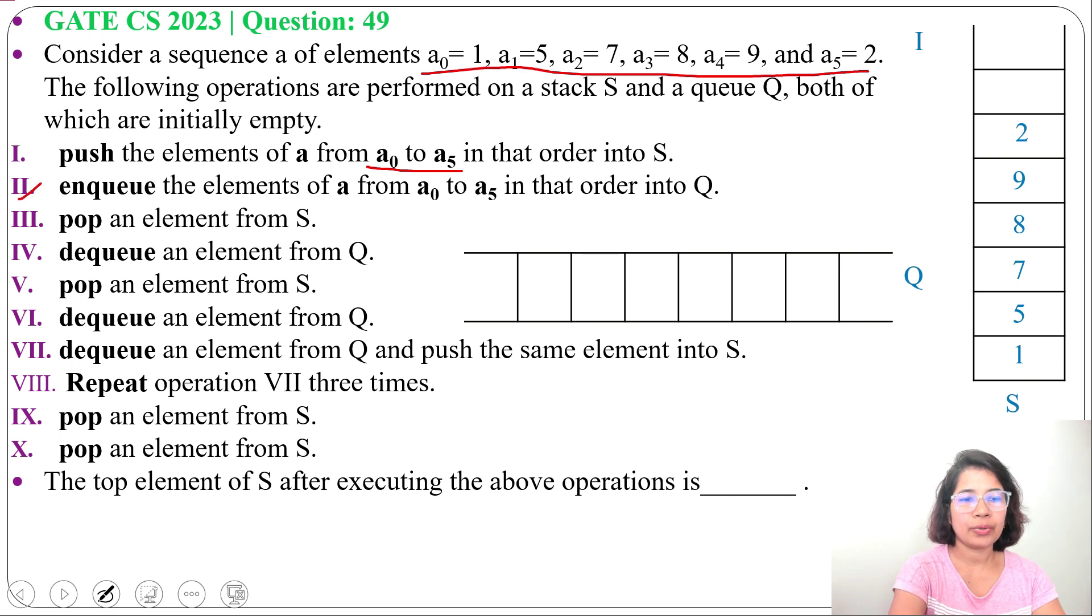Next, operation 2: enqueue the elements of a from a0 to a5 in that order into Q. So we will enqueue a0 to a5 into Q. First we will enqueue 1, then 5, then 7, then 8, then 9, then 2.